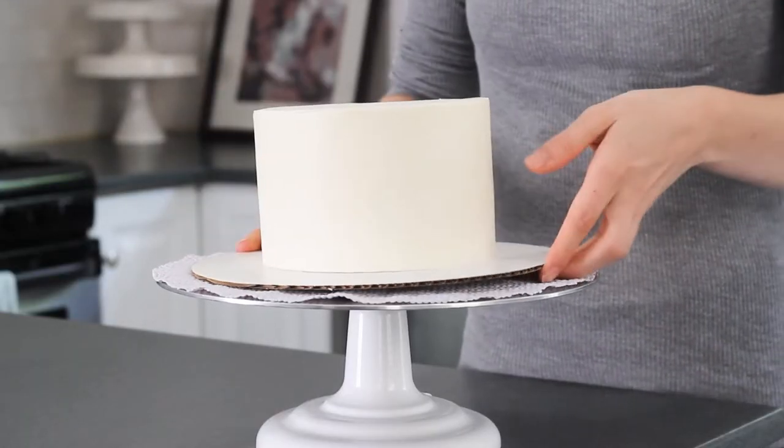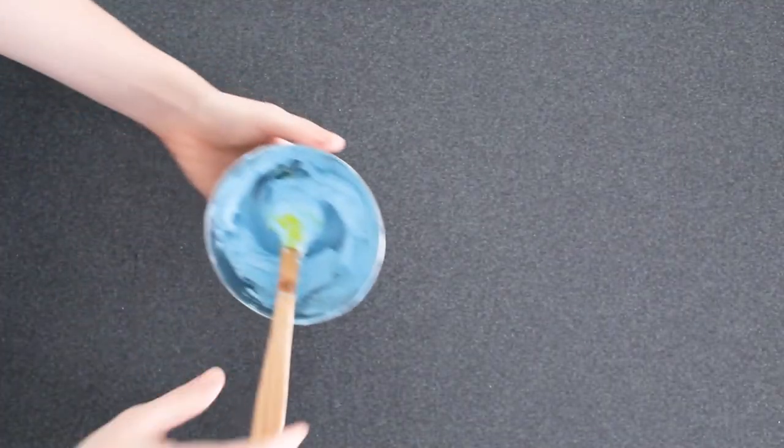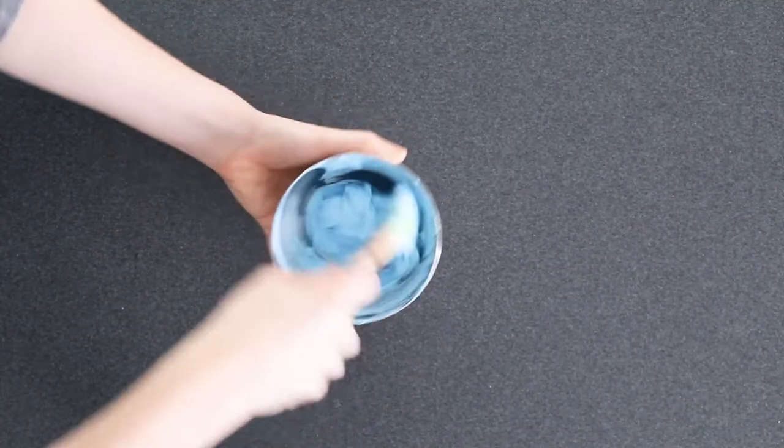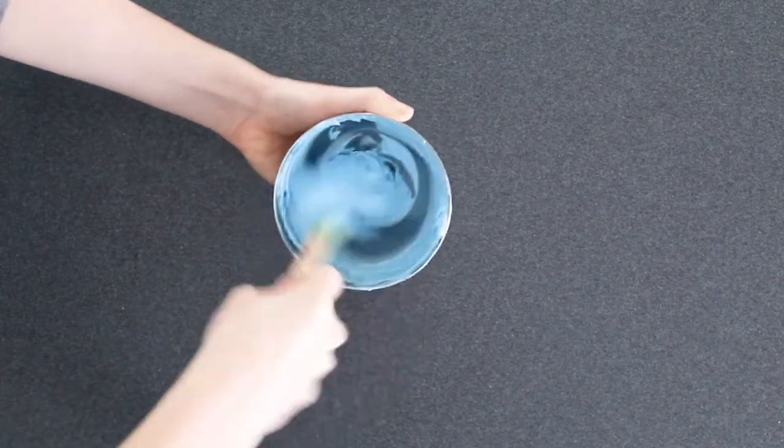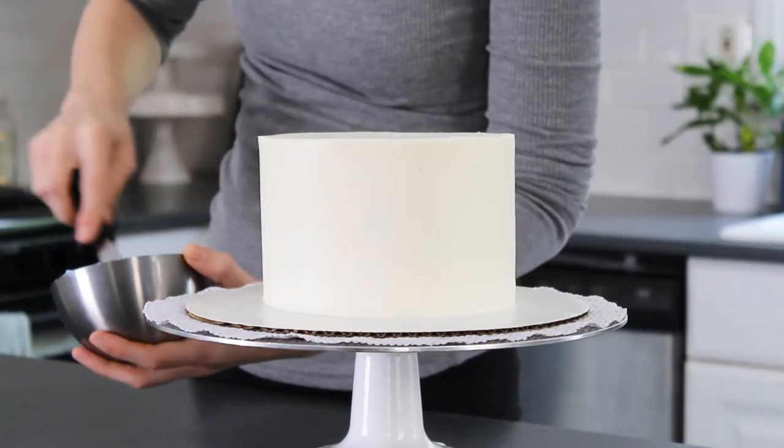You'll want to start with a cake that has already been frosted and chilled. For my background, I mixed a blue frosting because it'll contrast nicely with the yellow of the sunflowers. I'll list all the exact colors I use in the description below.